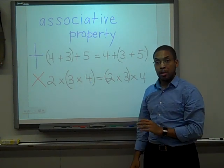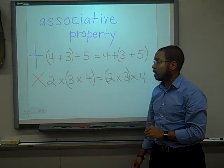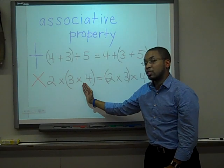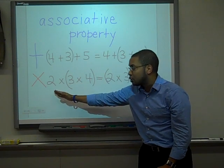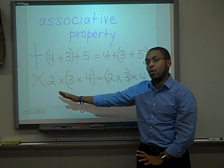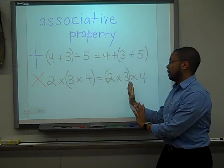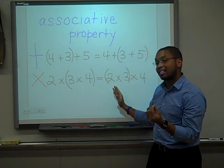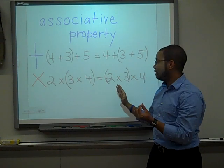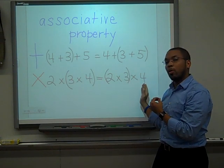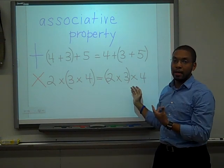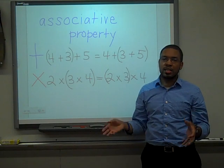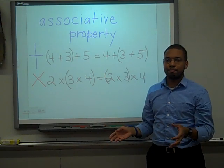The same works for multiplication as well. 3 times 4 is 12, times 2 is 24. Let's do 2 times 3 — that's 6, times 4 is 24. As we can see, the result does not change.